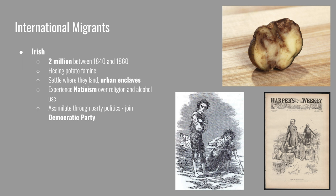The Irish assimilated through the use of party politics. They created political party machines in Boston and New York that allowed them to control their neighborhoods and influence state and national politics to help their community. By the 20th century, they became very loyal Democratic Party voters.